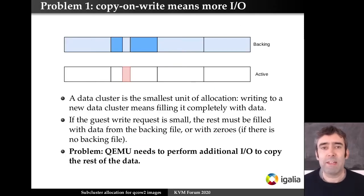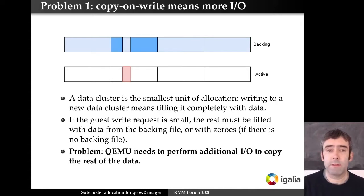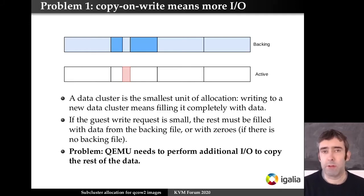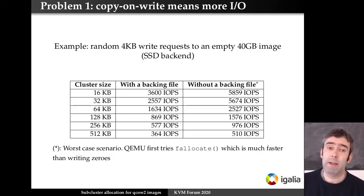The cluster is the smallest unit of allocation. Every time we allocate a new cluster, if the write request is smaller than the cluster size, we need to fill the rest with data. That means either going to the backing file to get it, or filling with zeros. In the image shown, we rewrite the area in pink, and we need to go to the backing file to read the areas in dark blue and copy them to the active file. This copy-on-write can be an expensive operation, and as we increase the cluster size we have to do more copy-on-write, so performance goes down.